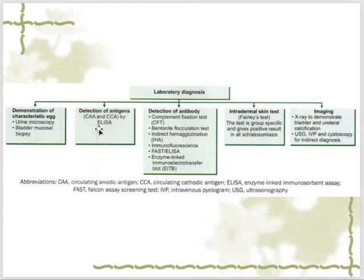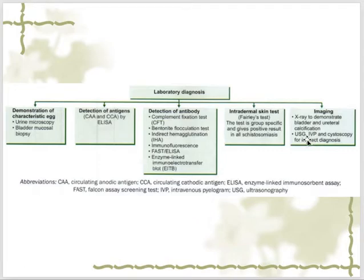We can also do liver ultrasound and CT scan of the liver. We can detect both antigens and antibodies with these various tests. There is also a test called the Fairley test — an intradermal skin test. They take the antigen from the larva, inject it intradermally, and observe the reaction. If someone shows redness or induration on the skin that comes back positive, they are considered positive. This test is specific for one schistosome species, not all.